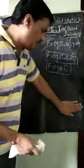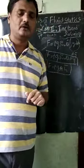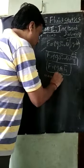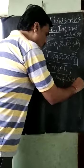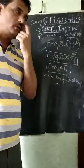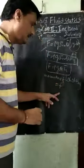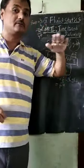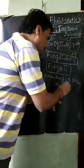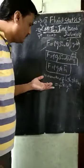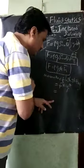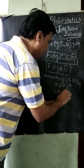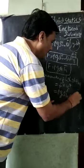Next, we derive the relation for h*. We take the moment of the whole surface about the OO axis. The moment of the whole surface equals F·y*, which we call Equation 2. Substituting F = ρg·sinθ·A·ȳ, Equation 2 becomes: ρg·sinθ·A·ȳ·y*.